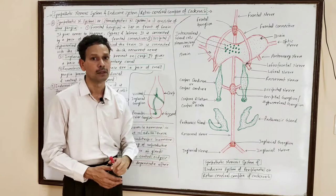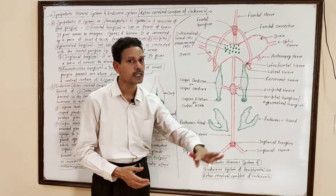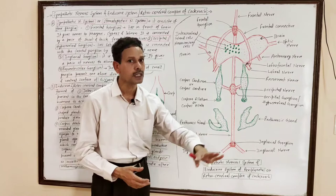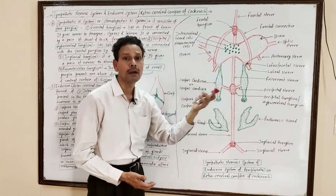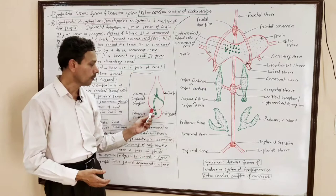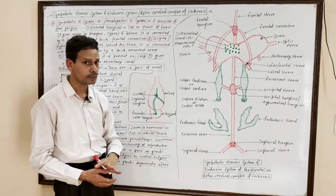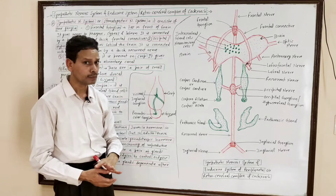The proventricular ganglia are a pair of small ganglia lying in the gizzard or proventriculus region — one dorsally and one ventrally. So in the Autonomic Nervous System, there are four types of ganglia: frontal ganglion (in front of brain), hypocerebral or occipital ganglion (below brain), visceral or inglovial ganglion (on crop region), and proventricular ganglia (on gizzard).